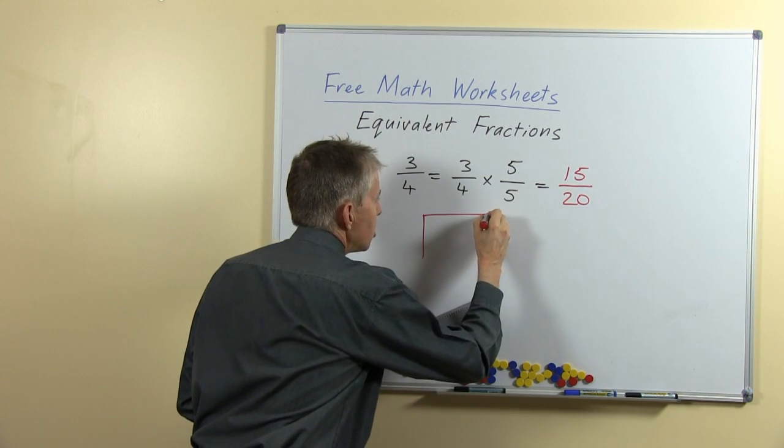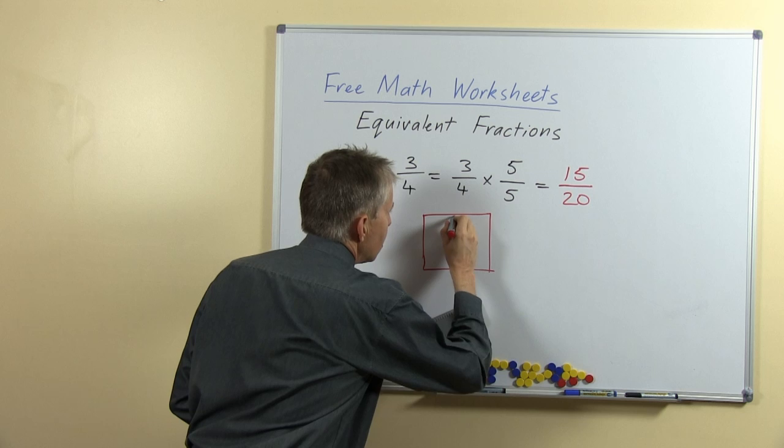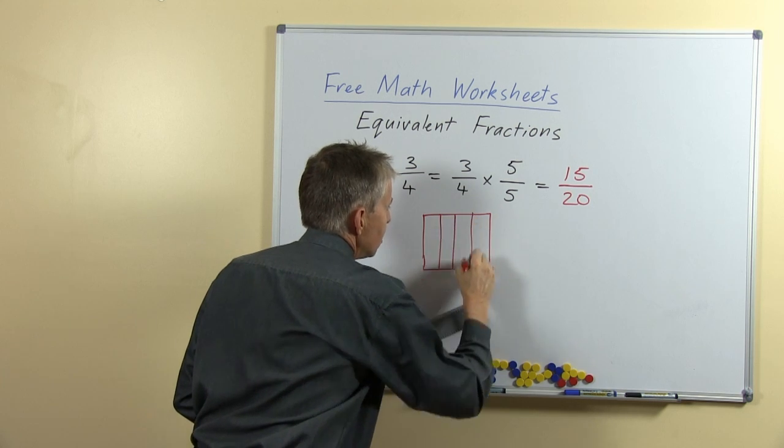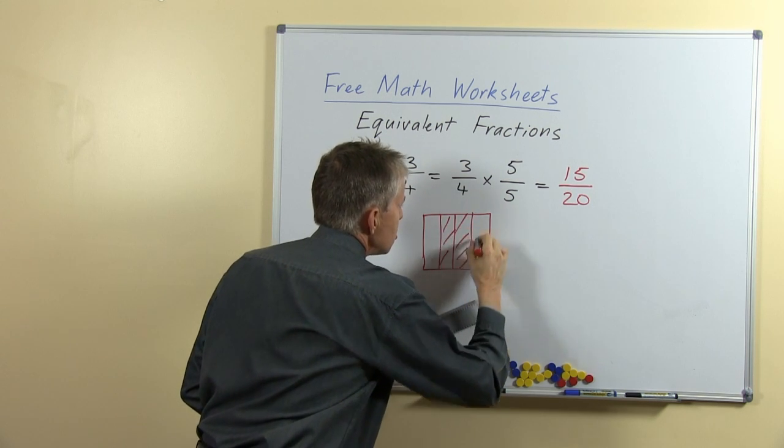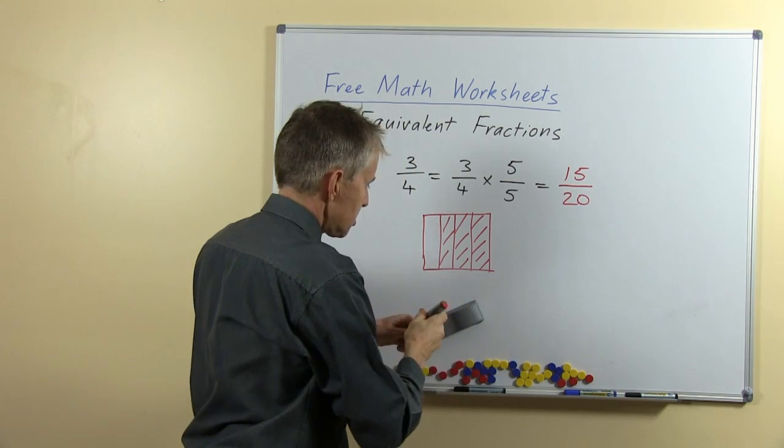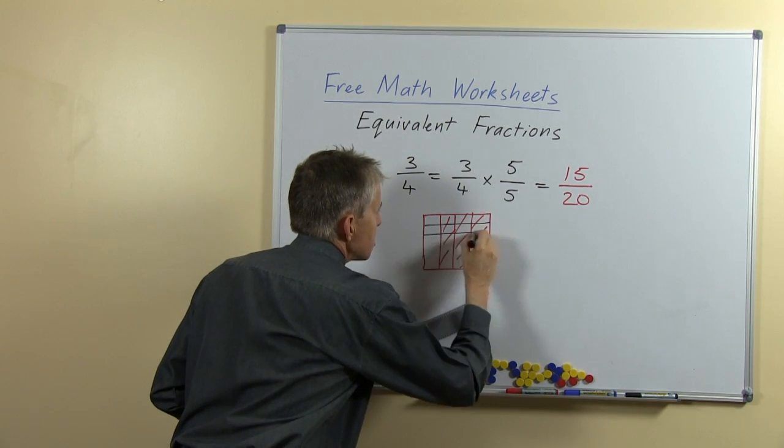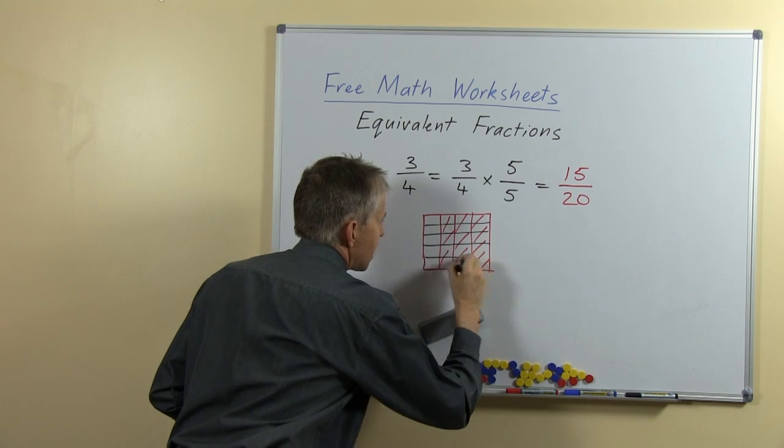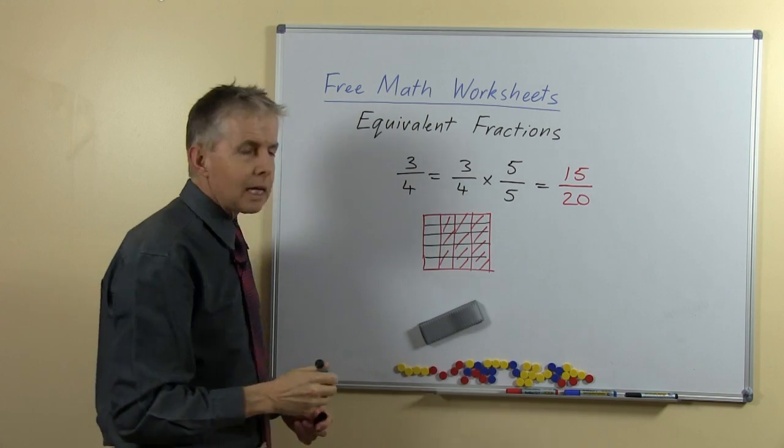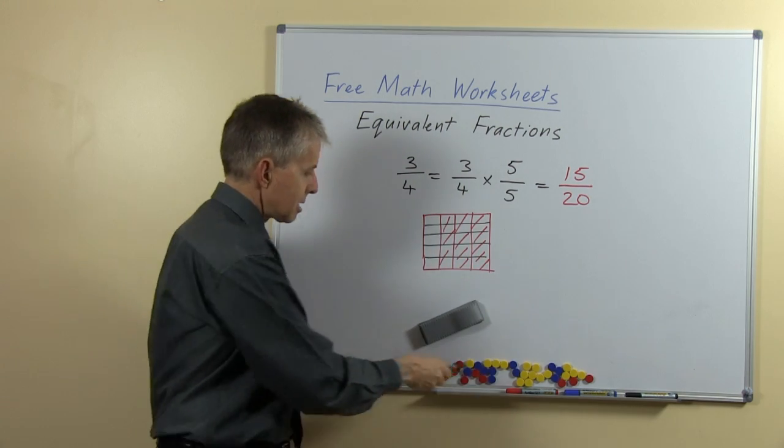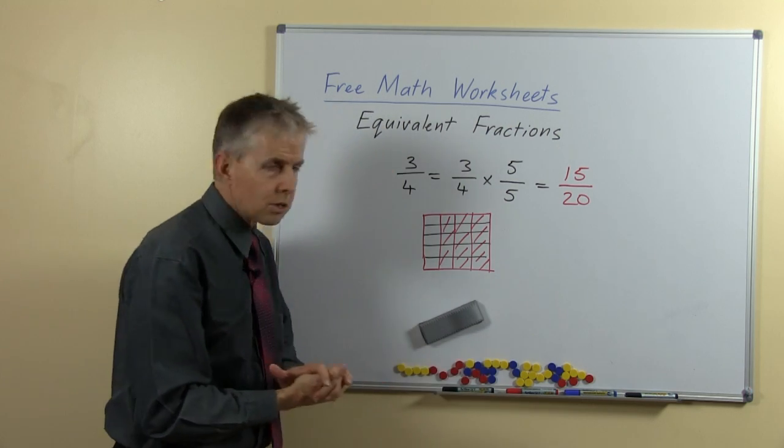And again, of course, we could use a picture. I would probably do this after doing the symbols, again to show the students the justification for the method. And I'll just quickly do this, try and get this accurate. There we go. And again we can see three-quarters is the same as fifteen-twentieths.